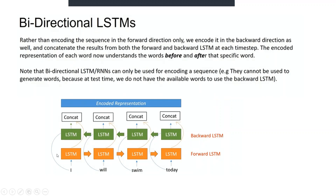Then it concatenates the results of both for the same timestamp. The output is generated by concatenating the forward LSTM and the backward LSTM outputs. So for any layer of an LSTM, my forward LSTM output would be concatenated with the backward LSTM output, and this becomes the encoded representation. Rather than encoding a sequence in only a forward direction, we encode it in the backward direction as well and concatenate the results from both at each timestamp. The encoded representation of each word now understands the words before and after that specific word.